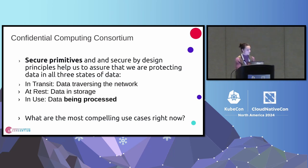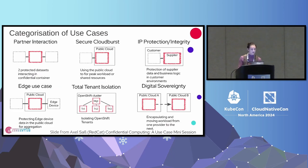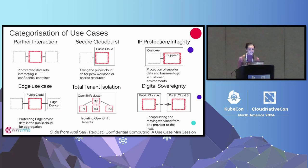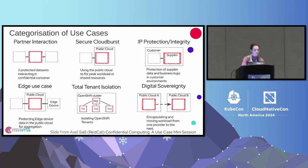What are the most compelling use cases right now? Here is a very good way to look at the different use cases and categorizations, from Axel from Red Hat. There are six interesting categories: partner interaction; secure cloud burst, which becomes really interesting in the context of GPU cloud bursts; IP protection and integrity; taking this to edge devices; total tenant isolation with OpenShift; and digital sovereignty, of which the cases are very interesting and we'll talk about one today.